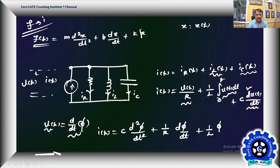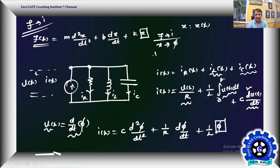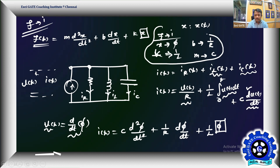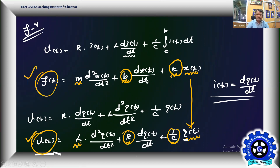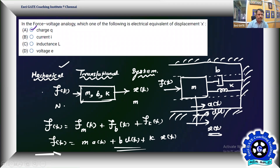Now in force current analogy: displacement x corresponds to flux Φ, force corresponds to current, spring constant K corresponds to 1/L, friction B corresponds to 1/R, and mass M corresponds to capacitance C. So if it is force current analogy, displacement is analogous to flux; if force voltage analogy, displacement is analogous to charge. That is the key difference.